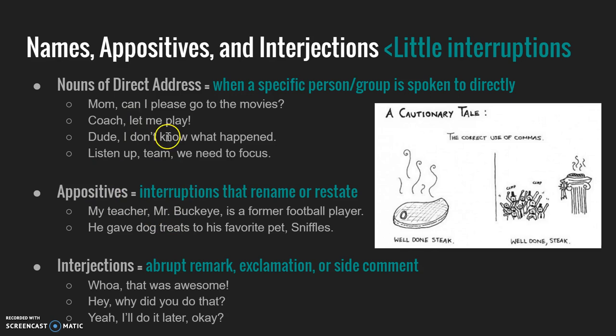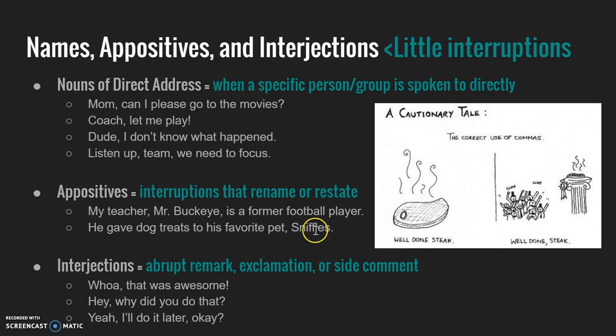Appositives are kind of like nouns of direct address and they can actually overlap. For example: 'My teacher, Mr. Buckeye, is a former football player.' Mr. Buckeye is the appositive because I am restating or renaming who my teacher is — I'm clarifying, adding on to, or naming that person. When I'm naming like that, it's called an appositive and I do put commas with it. Appositives can be in the middle like this or at the end: 'He gave dog treats to his favorite pet, Sniffles.' Sniffles is the appositive — I'm adding it on, so I put a comma right there.